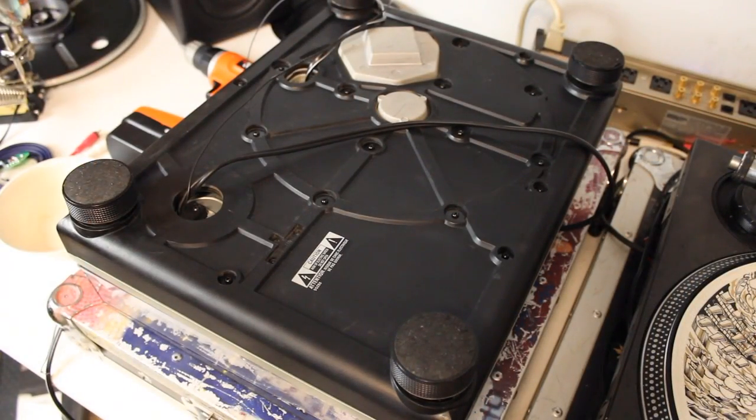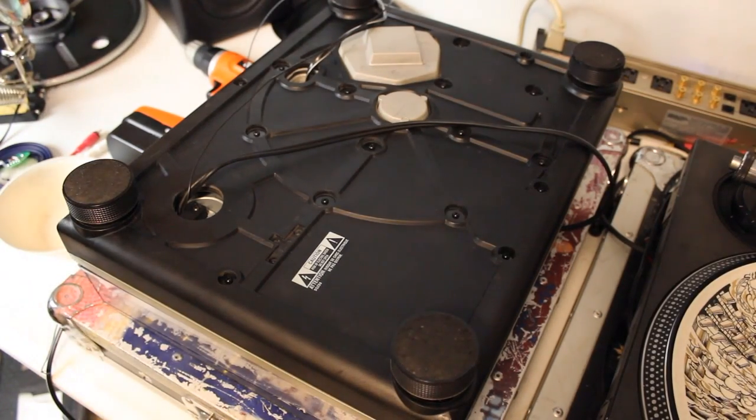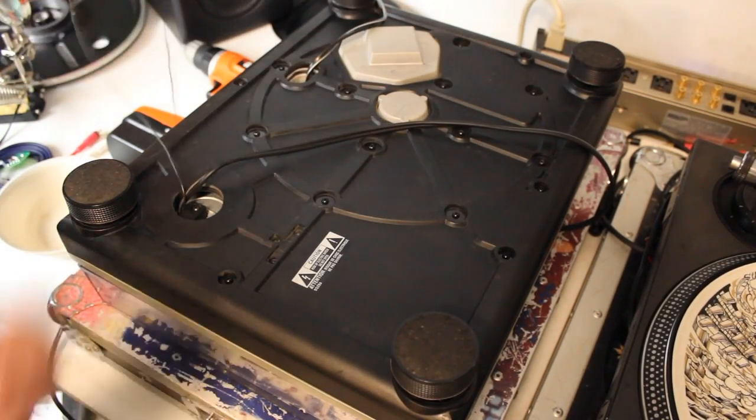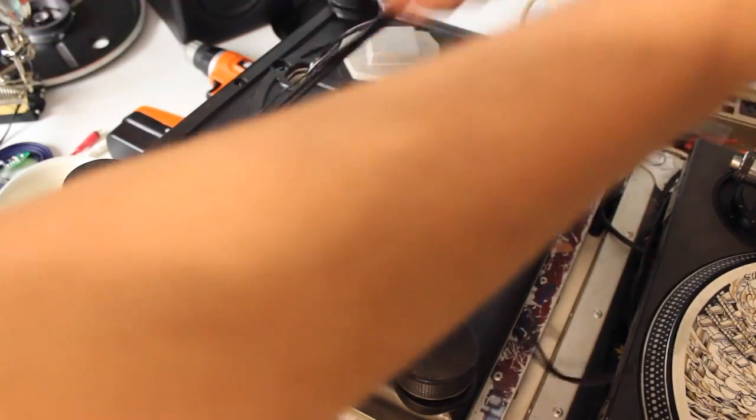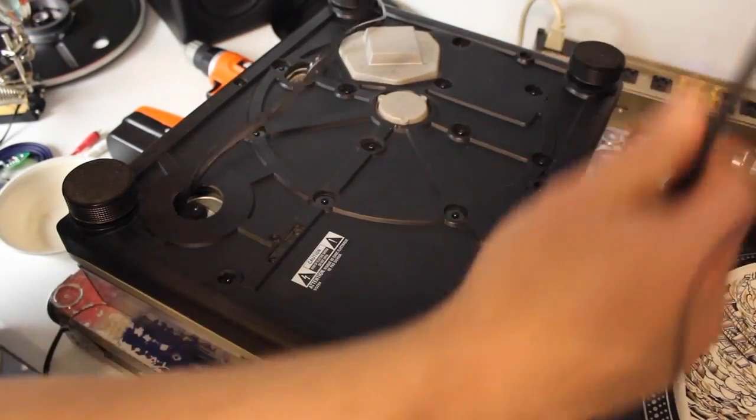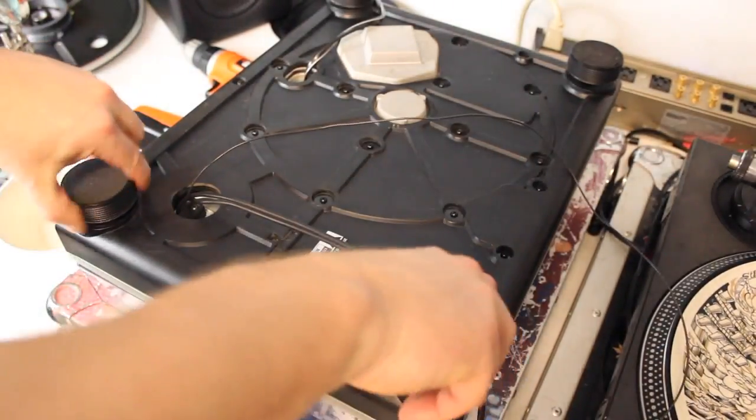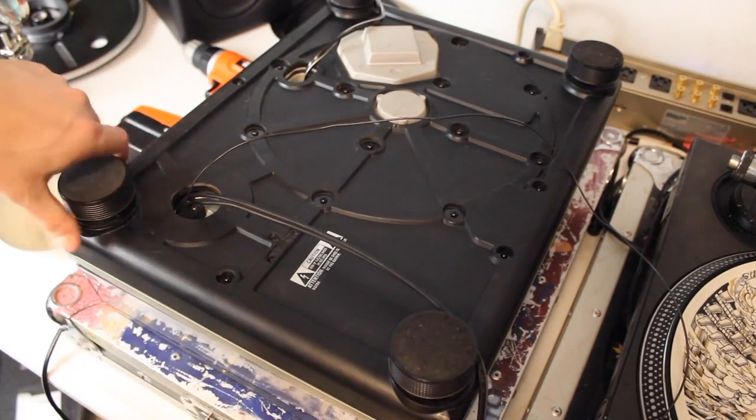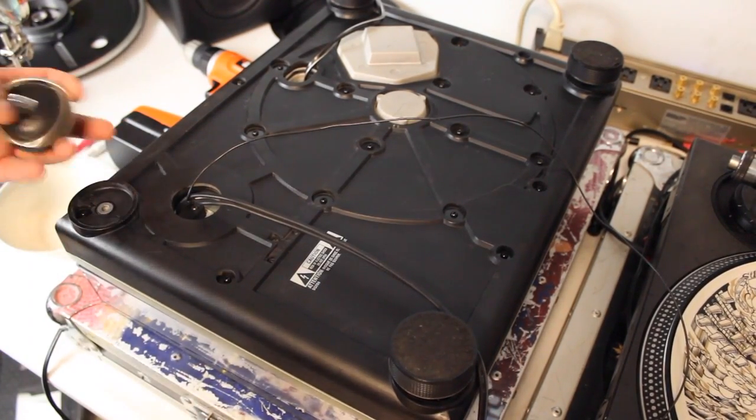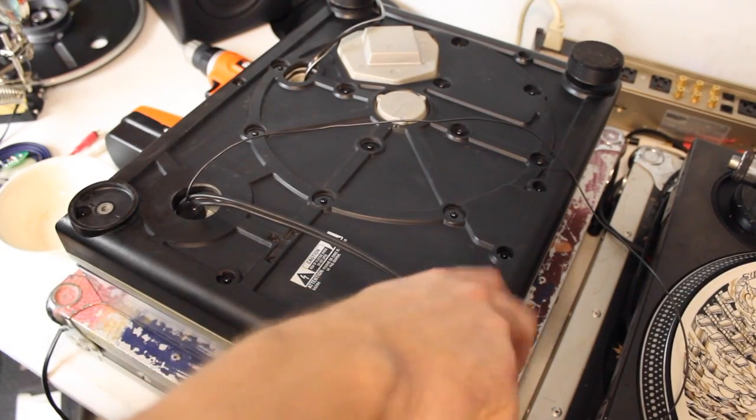Okay, we've got it turned over now, and we're ready to go ahead and start getting into the actual turntable itself. So what we're going to do first is kind of move these wires out of the way, and let's get our feet off of the turntable. Now, all they require is a counter-clockwise turn. You can unscrew those.